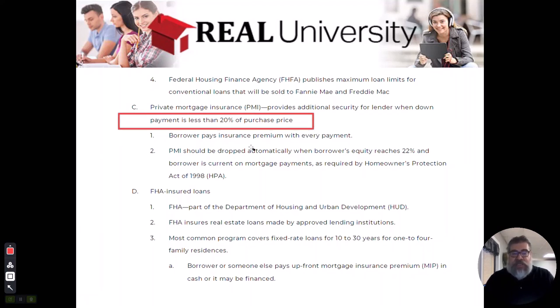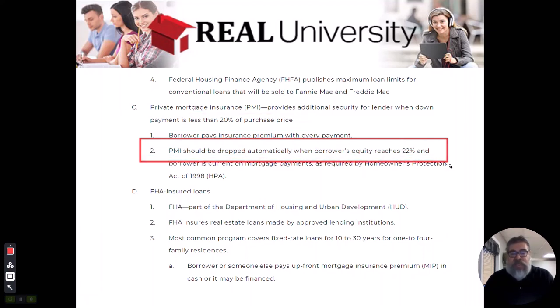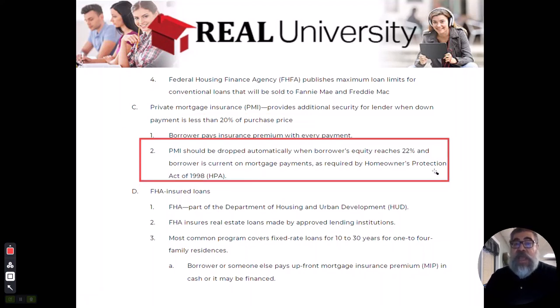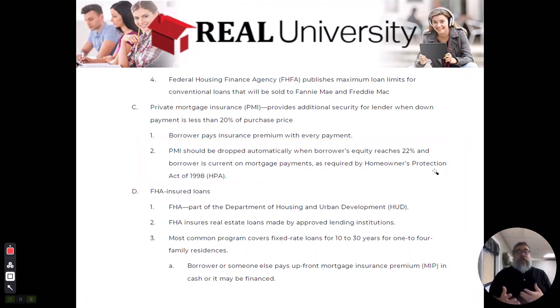And as soon as that PMI reaches that 20% to 22%, there is a loan called the Homeowner Protection Act which requires that PMI to come off. And thus your monthly house payment goes down. Once again, it's another term about house payment. When someone goes, well my house payment's $1,700. Well yeah dude, there's a $200 a month PMI payment that might come off. And people go, well my house payment went down because I'm not paying PMI. Well yes, because you generated some income.